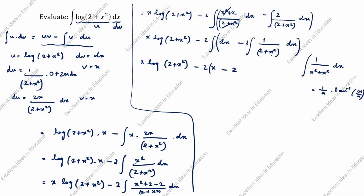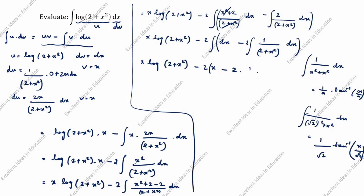Here a² is 2, so a is equal to root 2. Therefore the integral of 1/(root 2)² + x² dx equals 1/a which is 1/root 2, into tan inverse of x/a which is x/root 2. So we write: 2 into 1/root 2 into tan inverse of x/root 2, plus c.